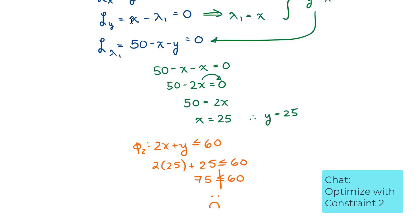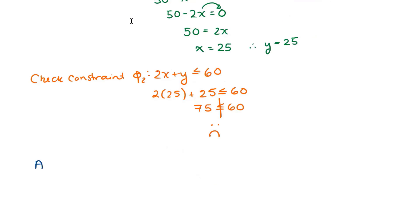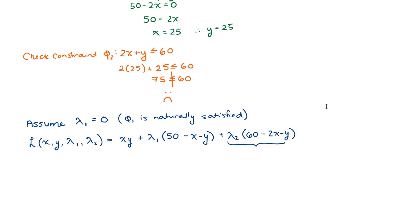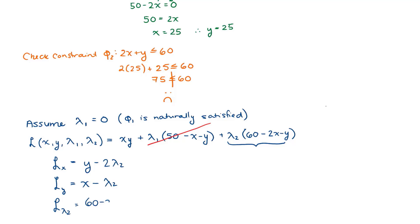So I'm going to redo the Lagrange with the second constraint. This time I'm going to assume that lambda 1 equals 0 — i.e., that the first constraint is naturally satisfied when we meet constraint 2. Taking derivatives of the Lagrangian: with respect to x, I get y minus 2 lambda 2; with respect to y, I get x minus lambda 2; and with respect to lambda 2, I get 60 minus 2x minus y.